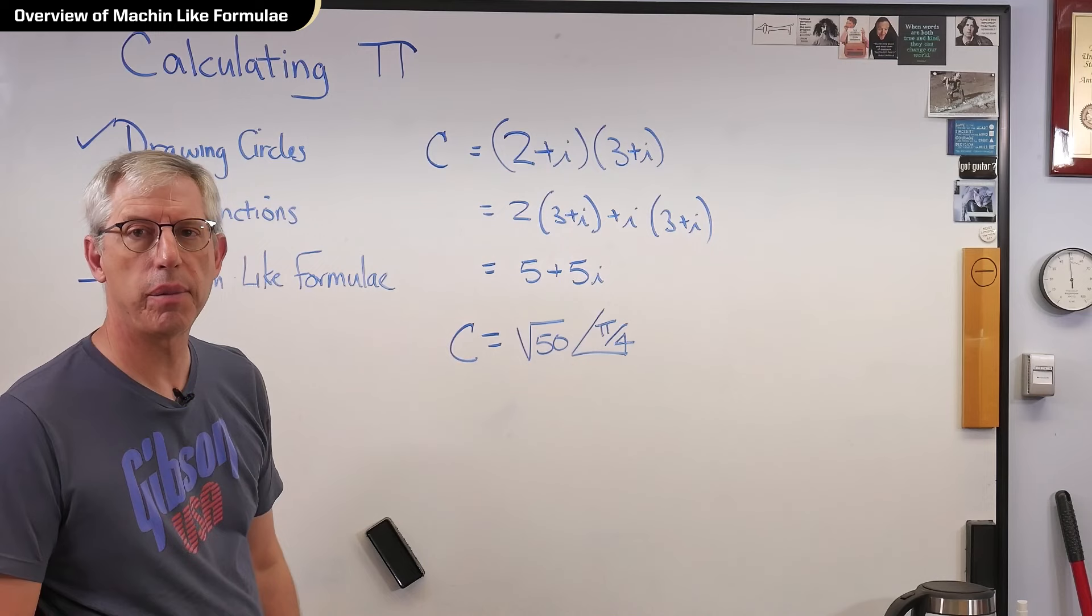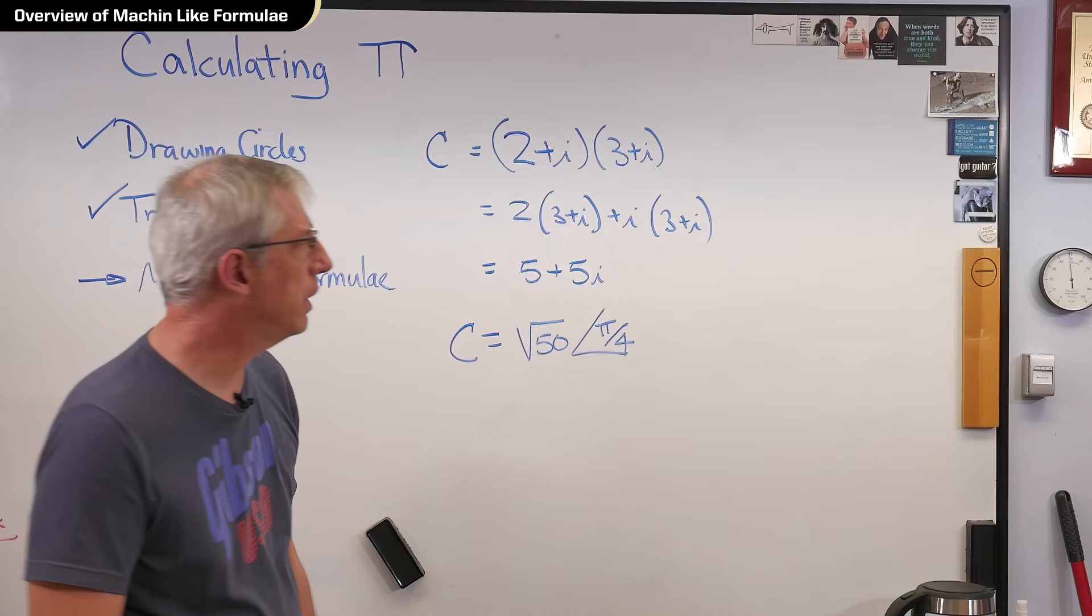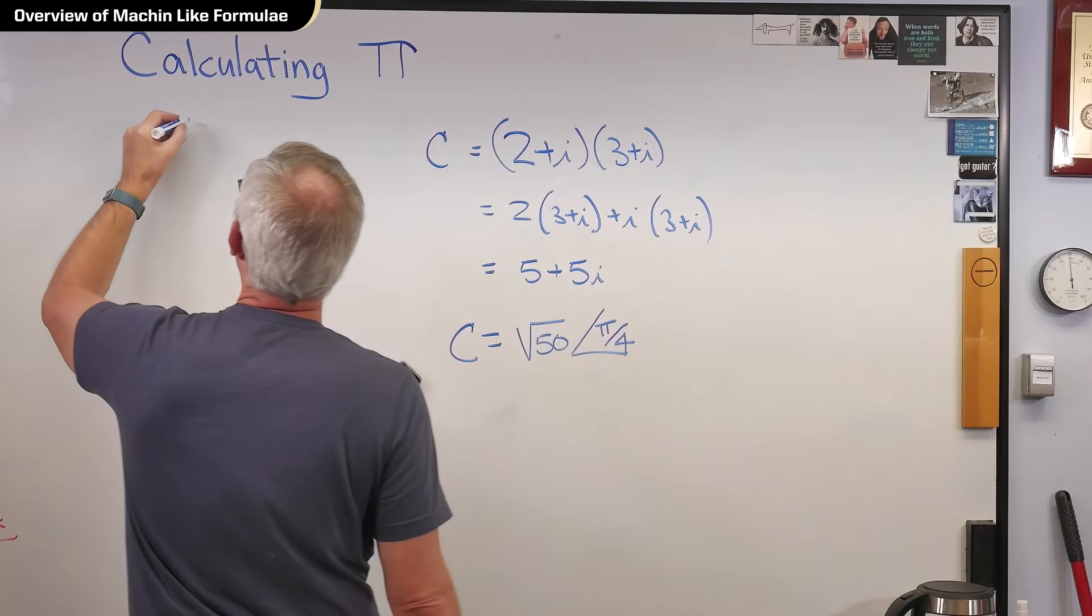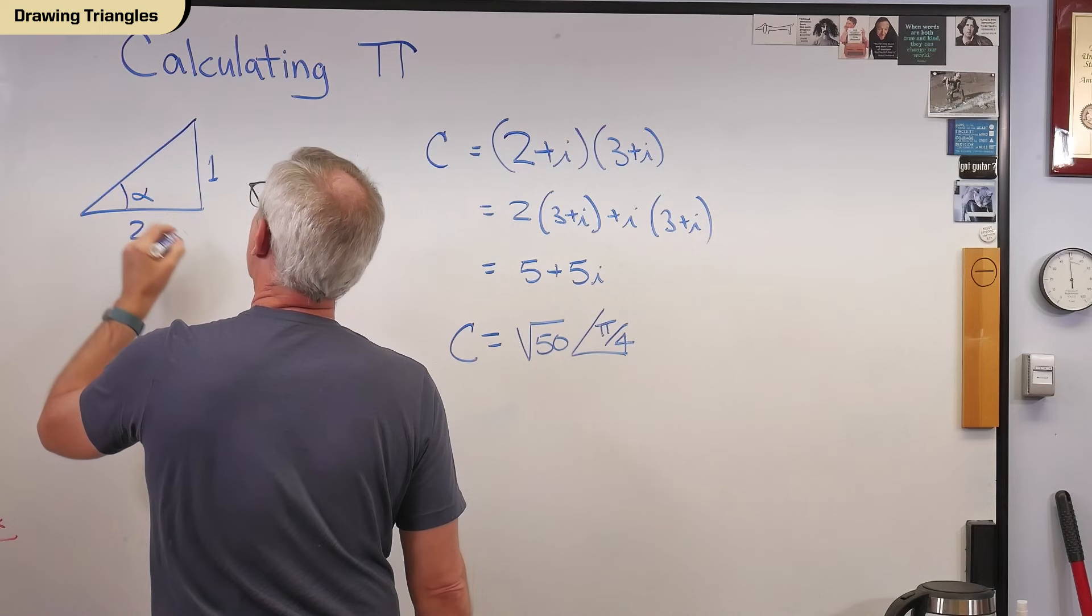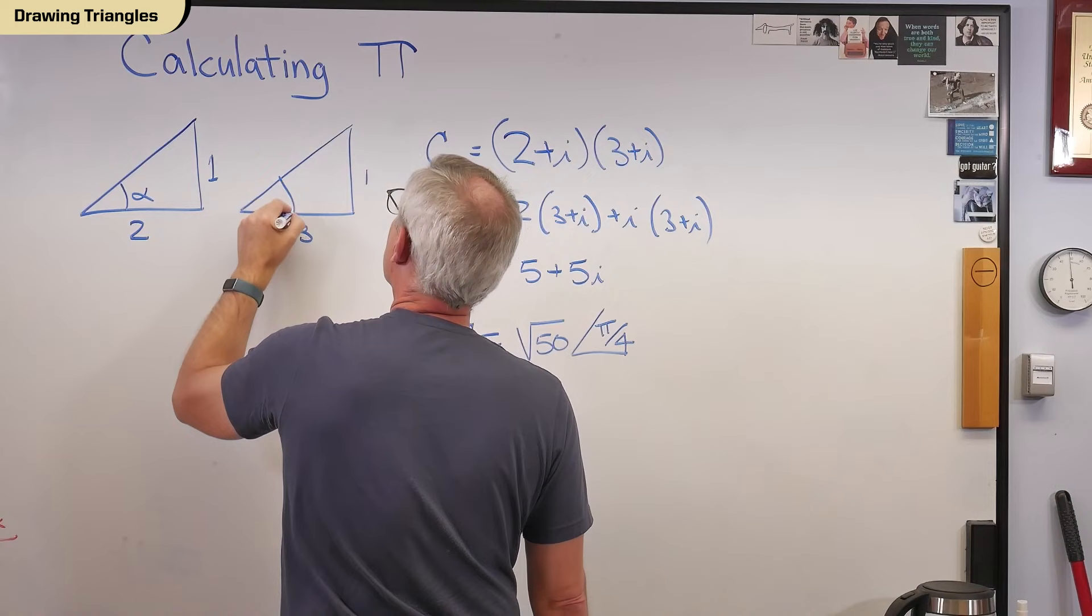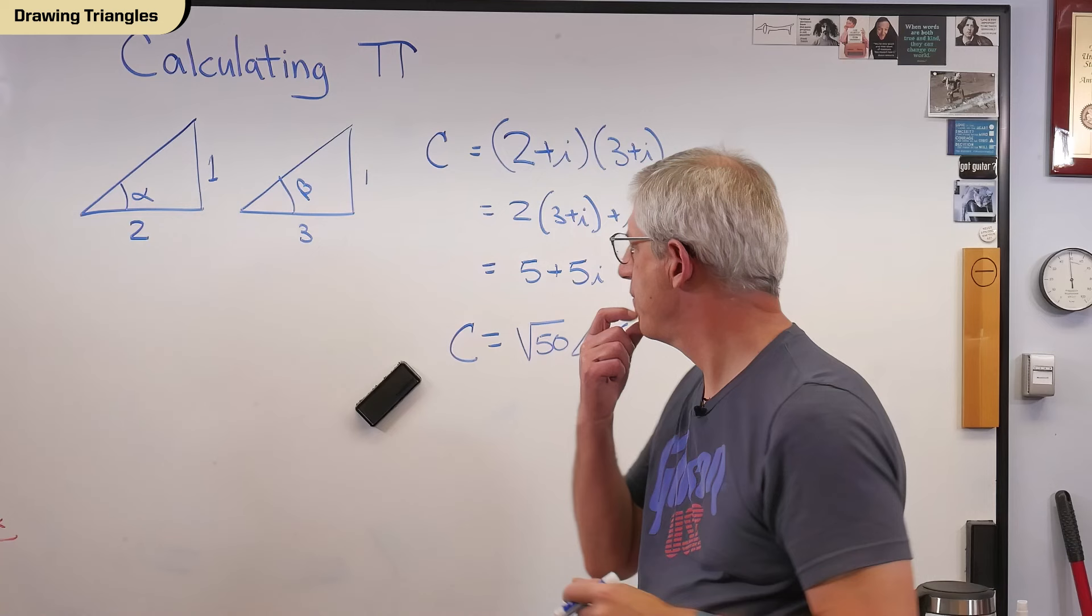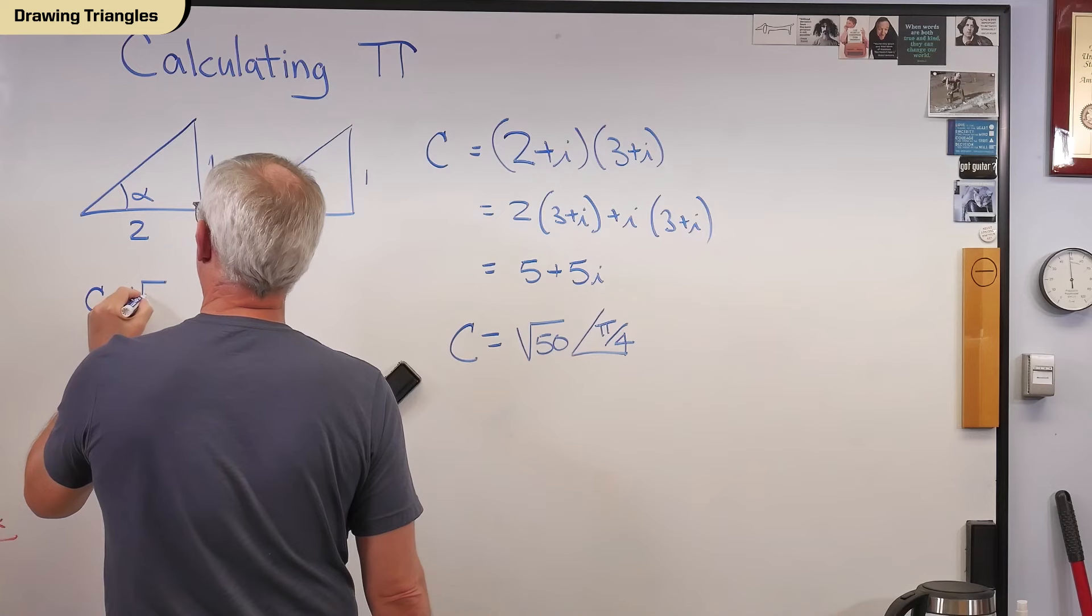Well, seems like we're onto something here. Let's draw out these numbers as triangles. Okay, with real being the horizontal and imaginary being the vertical, this is 2 and that's 1. And I'll call that angle alpha. This one is 3 and 1, and I'll call that angle beta.